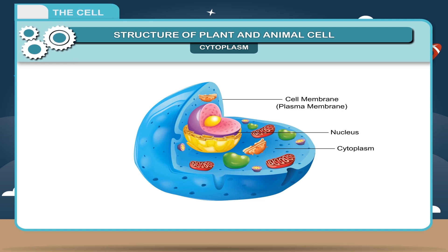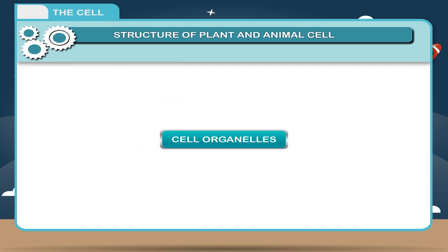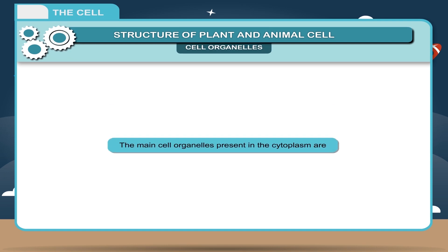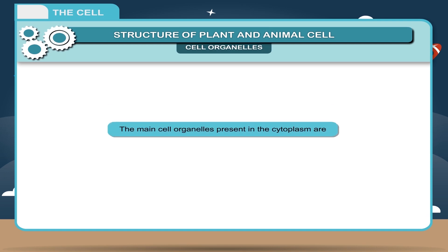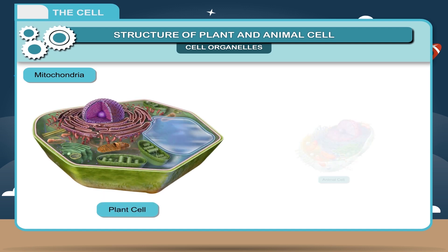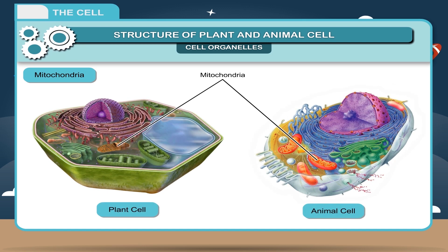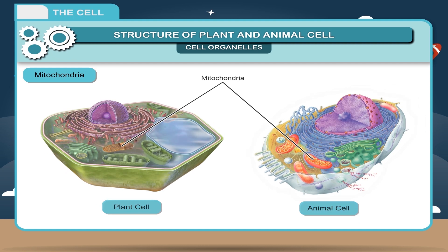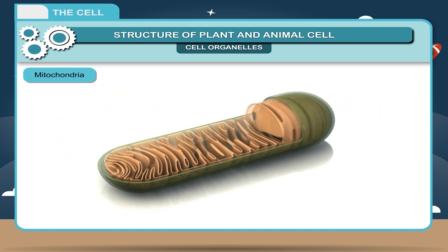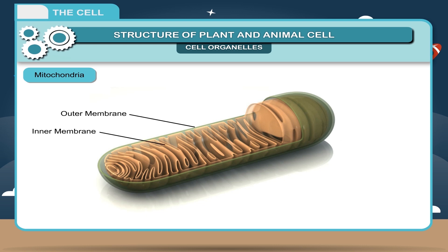Cytoplasm contains many tiny structures called cell organelles. The main cell organelles present in the cytoplasm are mitochondria. They may be spherical, oval or rod shaped. They are present in animal as well as plant cells and are responsible for the synthesis and storage of energy released by the oxidation of food. They are also called the powerhouse of the cell.